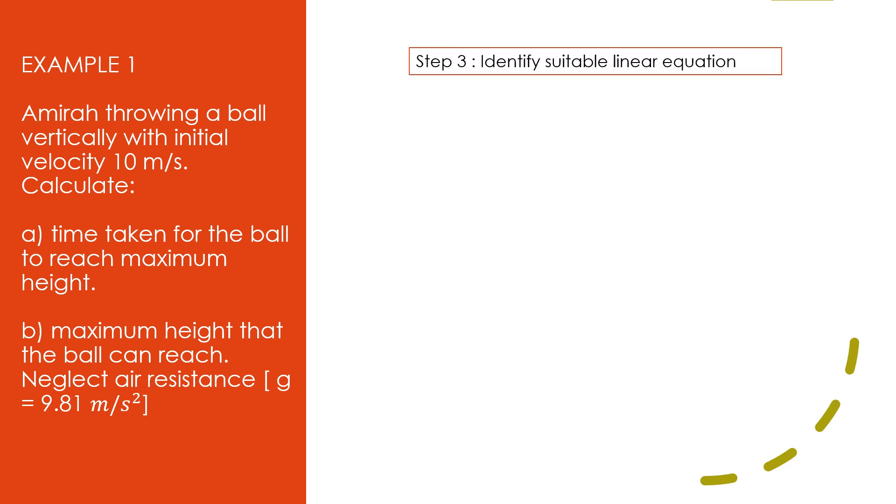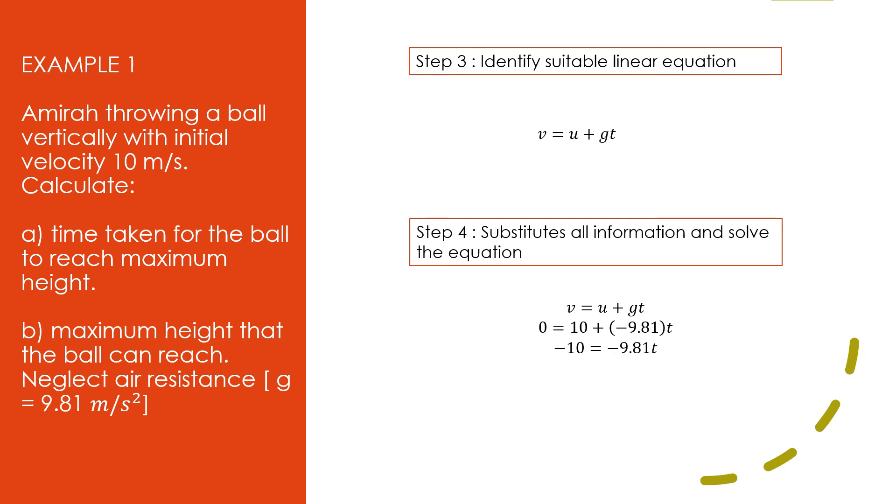Step 3, identify suitable linear equation. For answer A, we need to find time taken. So, we choose v = u + gt. Step 4, substitute all information and solve the equation. So, we have the linear equation. We substitute v = 0, u = 10, g = -9.81, and t as our subject. So, we solve our equation like this. And we get t = 1.02 seconds.